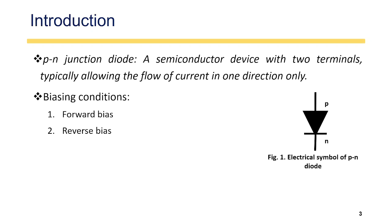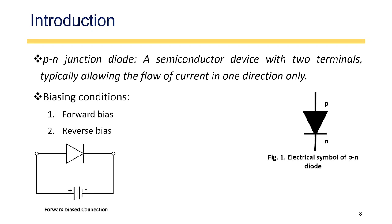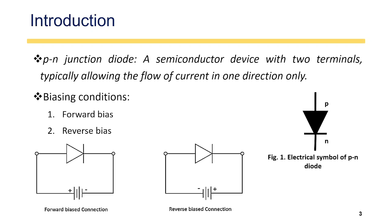Considering biasing conditions, there are two kinds of bias possible in a PN junction: forward bias and reverse bias. If we connect the positive terminal of the battery to the P side of the PN junction diode, it becomes forward bias. If we connect the positive terminal of the battery to the N side and the negative terminal to the P side, it becomes reverse bias.